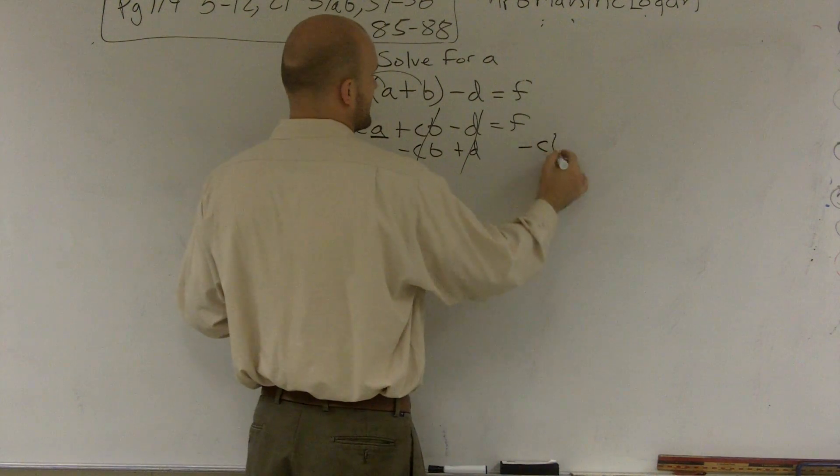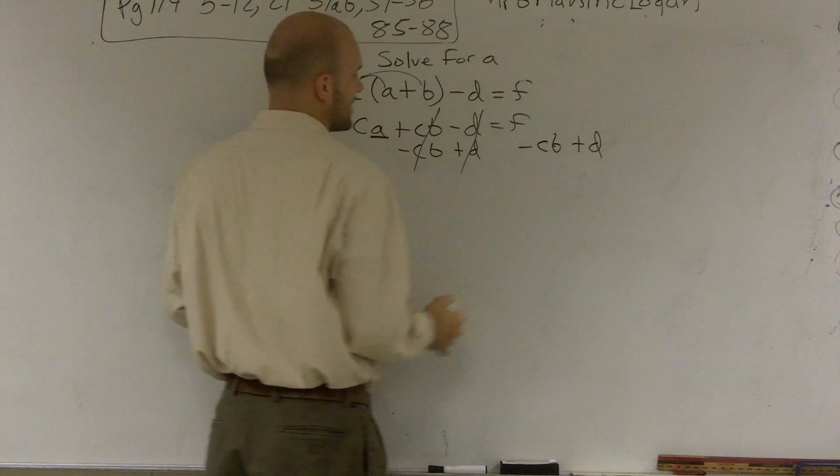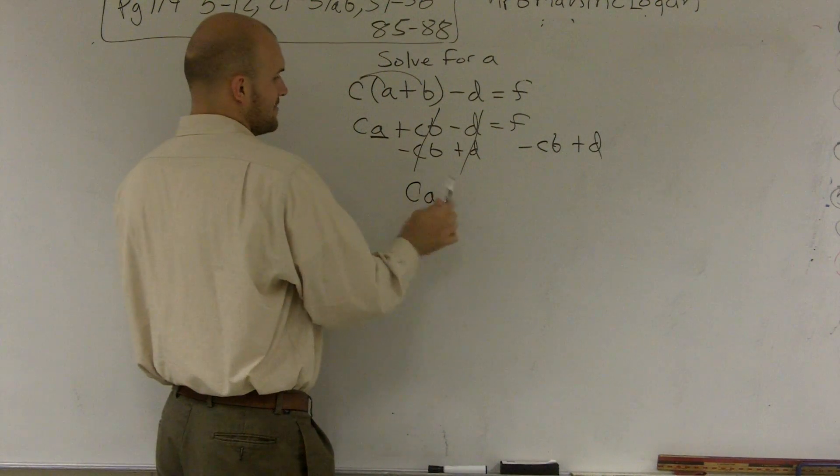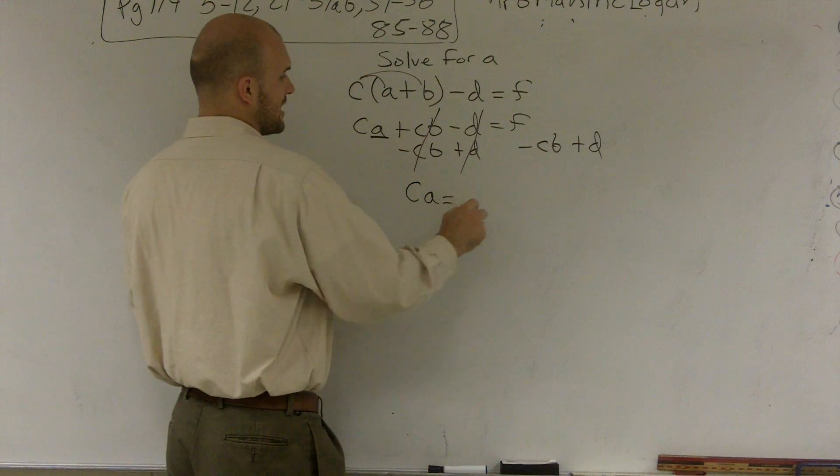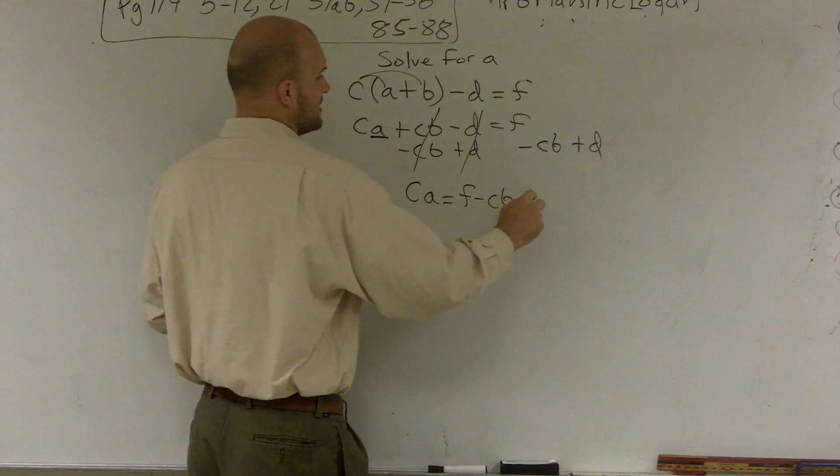Remember, whatever you do on one side, you have to do on the other side. So I'm left with CA equals F minus CB plus D.